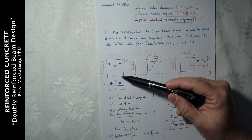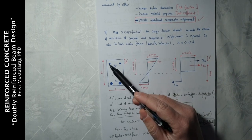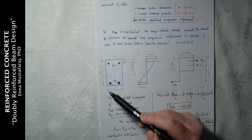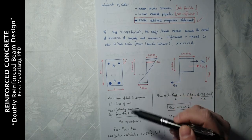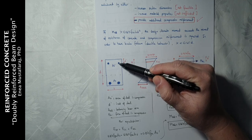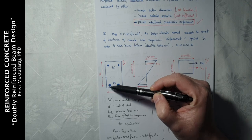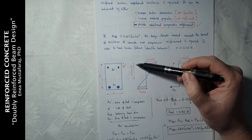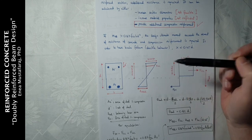In this figure we see the section, the strain diagram, and the stress block. We see that there is extra steel placed on top of the rectangular section, denoted by As', which is the area of steel in compression. There is also a new variable D', called the inset of steel, which is the distance from the top of the section to the center of the compression reinforcement. The effective depth D is the distance from the top of the section to the middle of the tension reinforcement, and B is the width of the section.